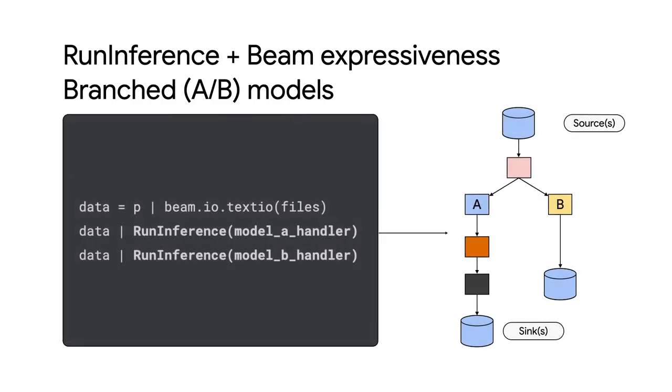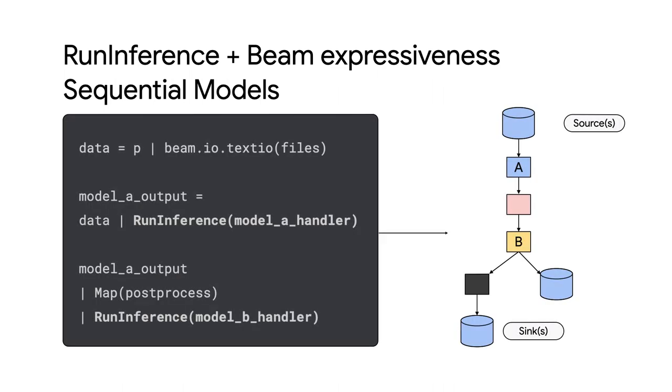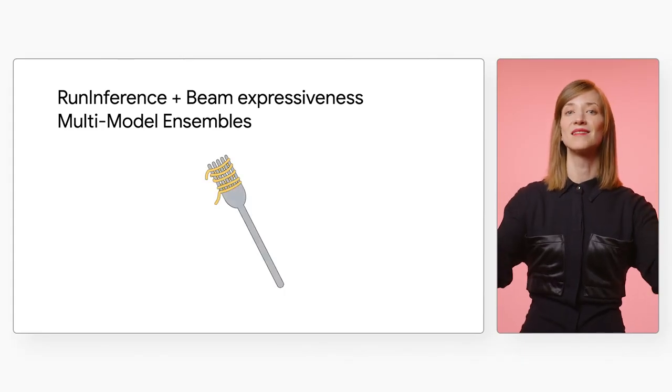From our data point's point of view, the first pattern is a branch — our data point has to go through two different models at the same time. The other pattern is when a data point goes through one model and then the result of that transformation has to go into another model. For our branching problem, all we need to do is apply different models to the same data — the code for this is very simple. And for our sequential models pattern, all we need to do is pass our data through the first model, then shape the data for the second model using a beam.map function. And that's it — we've rolled all that spaghetti into some simple patterns.